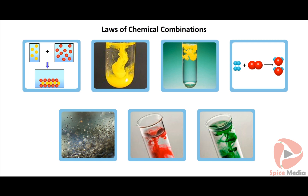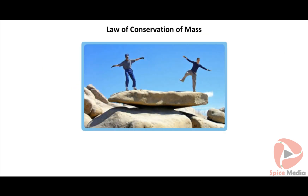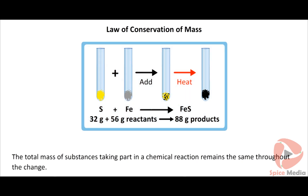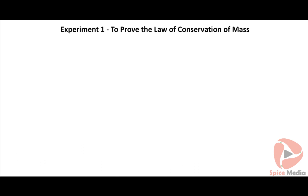Let us learn these laws in detail. Law of conservation of mass: whenever a chemical change occurs, the total mass of products is the same as the total mass of reactants. Experiment one — to prove the law of conservation of mass.